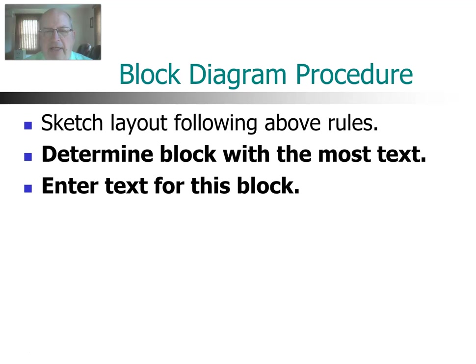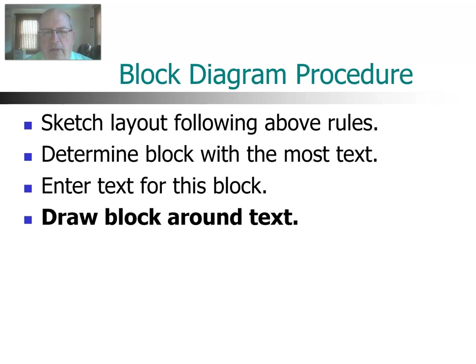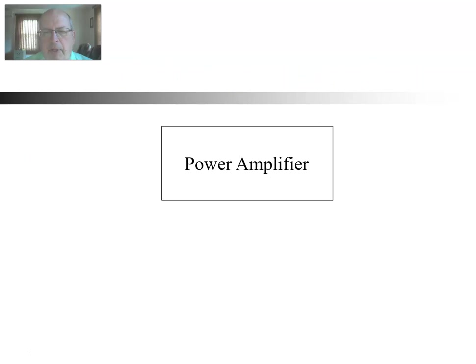And once you have that title with the most letters, then you're going to enter that text, and there it is, Power Amplifier. Okay, once you do that, then the next thing is to draw the block around the text. And a block, of course, is simply a rectangle. So now I drew a rectangle around my text. That is the first subsystem within my block diagram.